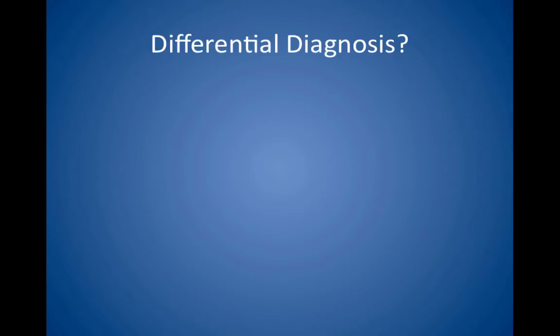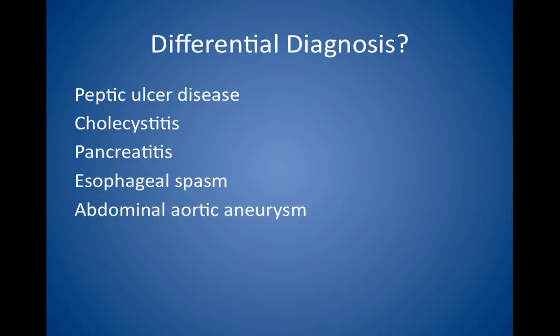What is the differential diagnosis in this case? The differential diagnosis includes peptic ulcer disease, cholecystitis, pancreatitis, esophageal spasm, and abdominal aortic aneurysm, or AAA.